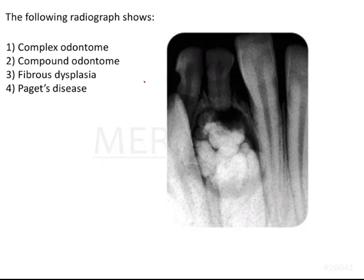A radiograph is given and we have to identify what is present. The following radiograph shows complex odontoma, compound odontoma, fibrous dysplasia, and Paget's disease. Paget's disease and fibrous dysplasia are not likely here; this looks more or less like an odontoma.